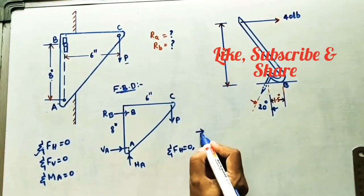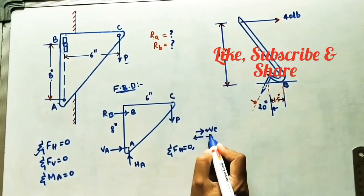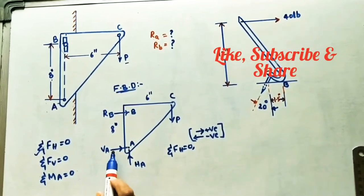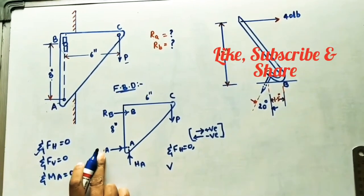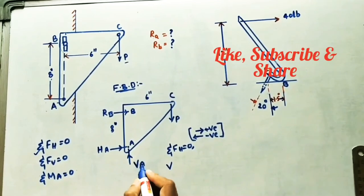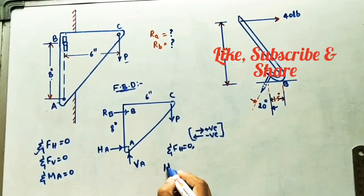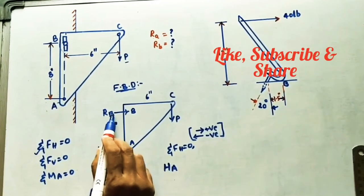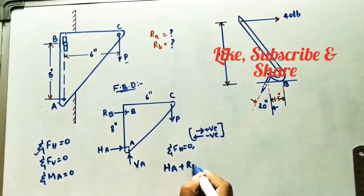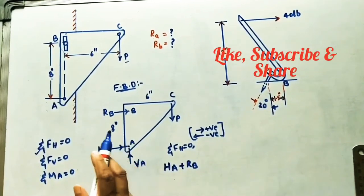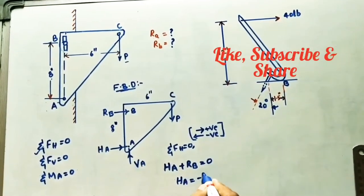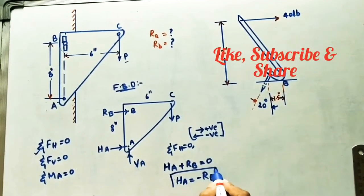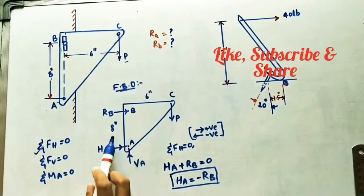Applying the first condition, sigma FH equals zero: taking rightward as positive and leftward as negative. The horizontal forces are HA and RB, both positive in the horizontal direction. So HA plus RB equals zero, which gives HA equals minus RB. This means HA and RB have the same magnitude but act in opposite directions.